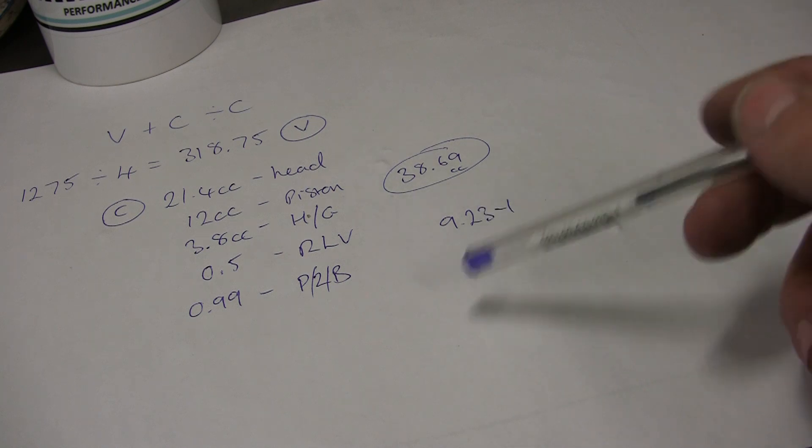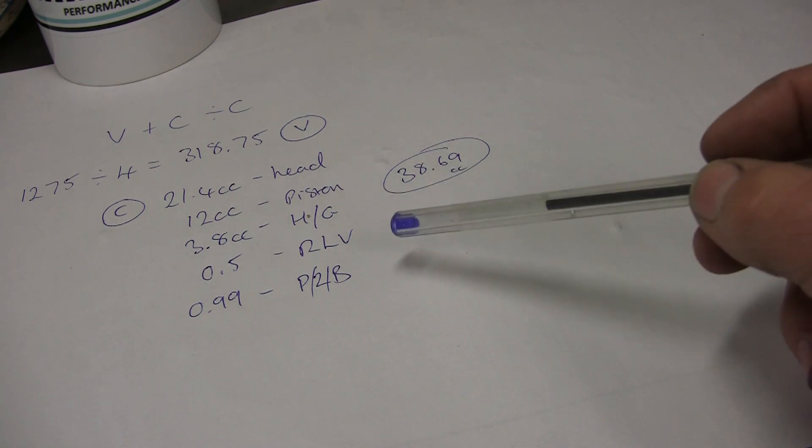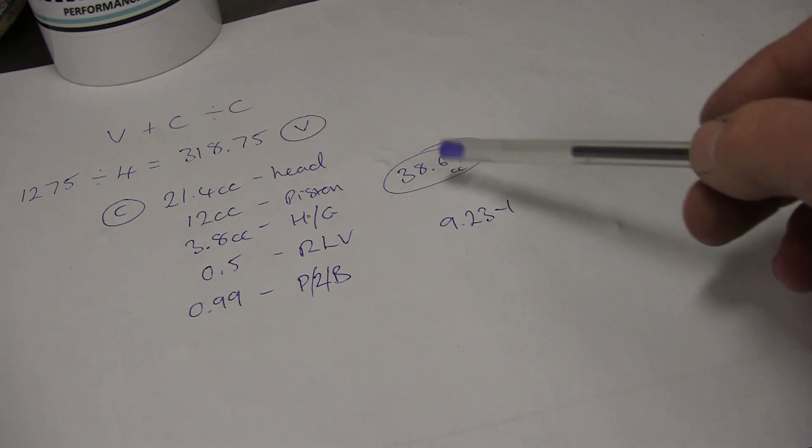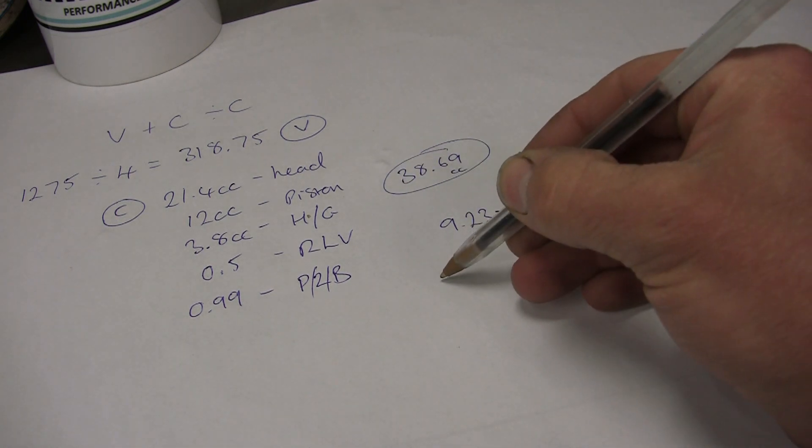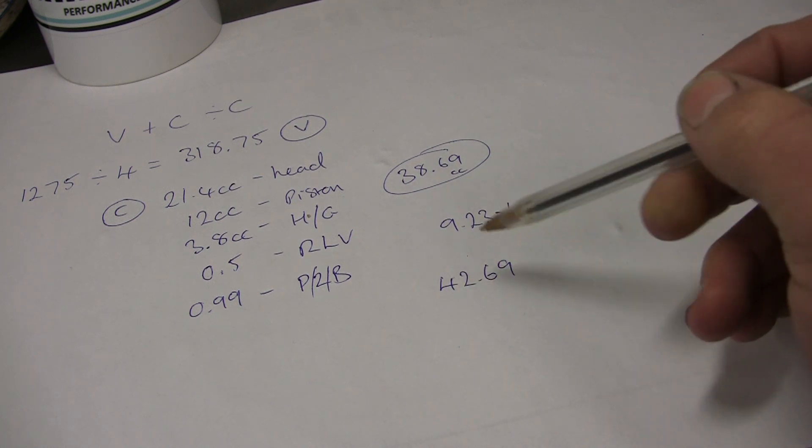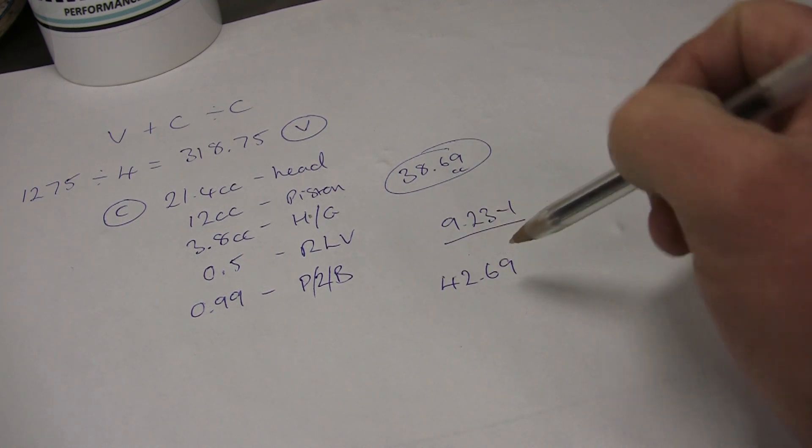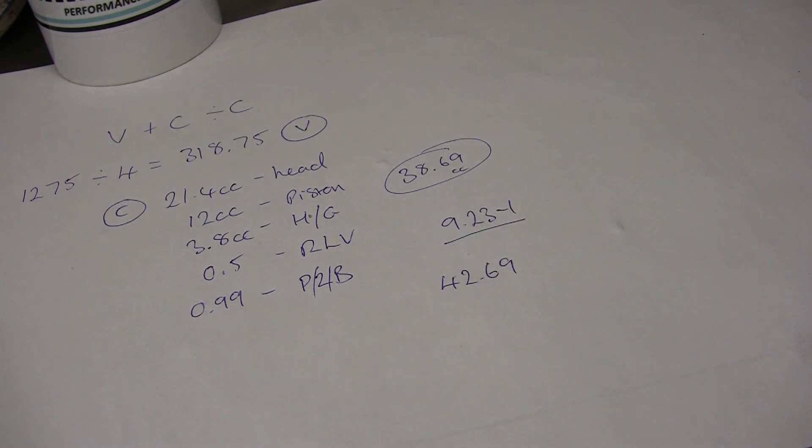Let's say this is for a turbo build and you want to lower the compression. We're going to take 4 cc out of the head. If we add 4 cc to that, it'll give us 42.69. How much difference does that 4 cc make to the original compression ratio?